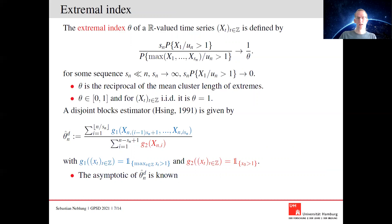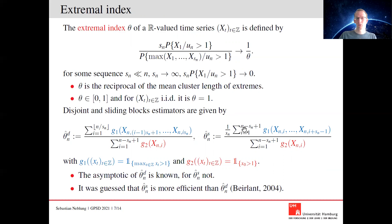The sliding block version was also proposed in the literature, where we use the same block function and same block length in the numerator, but start the second block at the second observation, the third at the third observation, and so on, summing over many more blocks and renormalizing with a factor of one over s_n in front. It was suggested that the sliding block estimator is more efficient, but so far the asymptotic behavior of the sliding block statistic was never analyzed — and this is what we want to do.